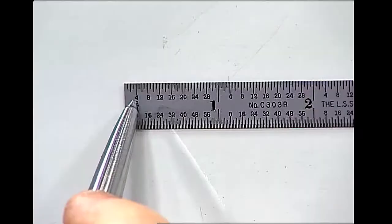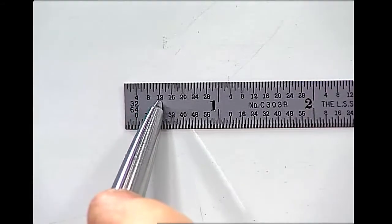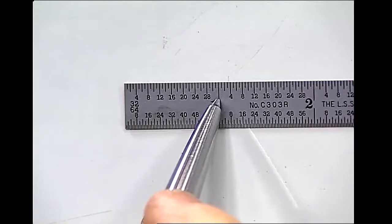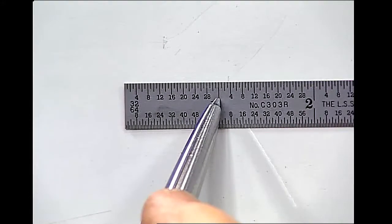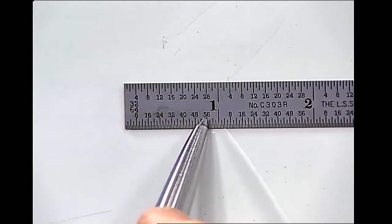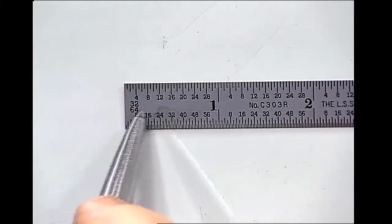Let's just look: four, eight, twelve, sixteen, twenty, twenty-four, twenty-eight, thirty-two. There's thirty-two thirty-seconds in one inch. On the bottom, there's sixty-four sixty-fourths.